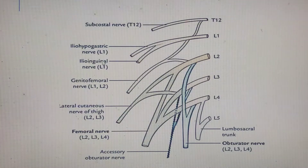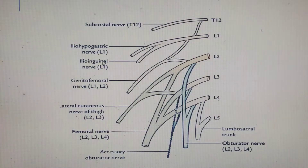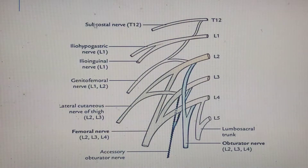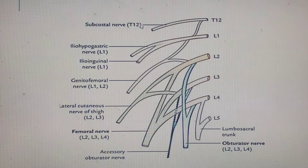These nerves are important for giving motor supply to the internal oblique muscle as well as the transversus abdominis muscle. Their root value is L1. Above that, T12 is also part of the plexus, giving the subcostal nerve — the nerve emerging below rib number 12 from the ventral rami of T12. The subcostal nerve supplies the three lateral abdominal wall muscles — external oblique, internal oblique, and transversus abdominis — and continues to supply the rectus muscle.